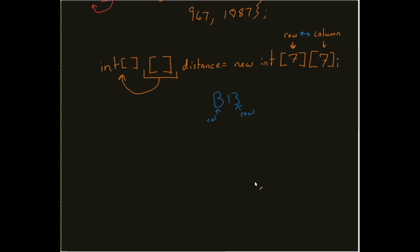distance at row two, column one equals 214.